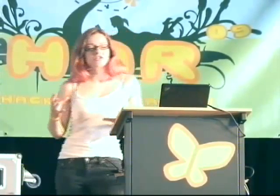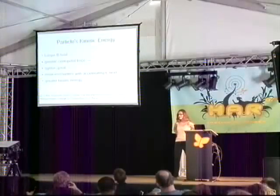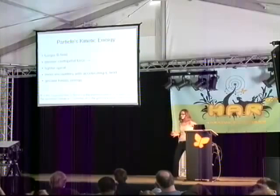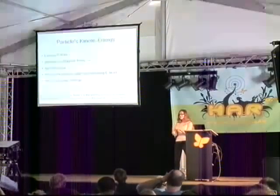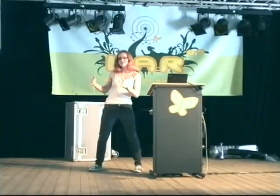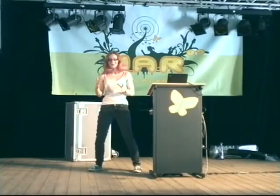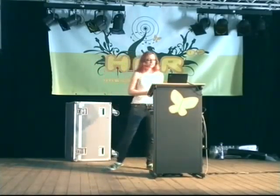In general, the most important factor affecting the kinetic energy you'll be able to get out of the cyclotron is the strength of the magnetic field. If you have a larger magnetic field, there's a greater centripetal force pulling the particles around — meaning a tighter spiral — so each particle encounters the accelerating electric field more often, and you end up getting particles with greater kinetic energy.